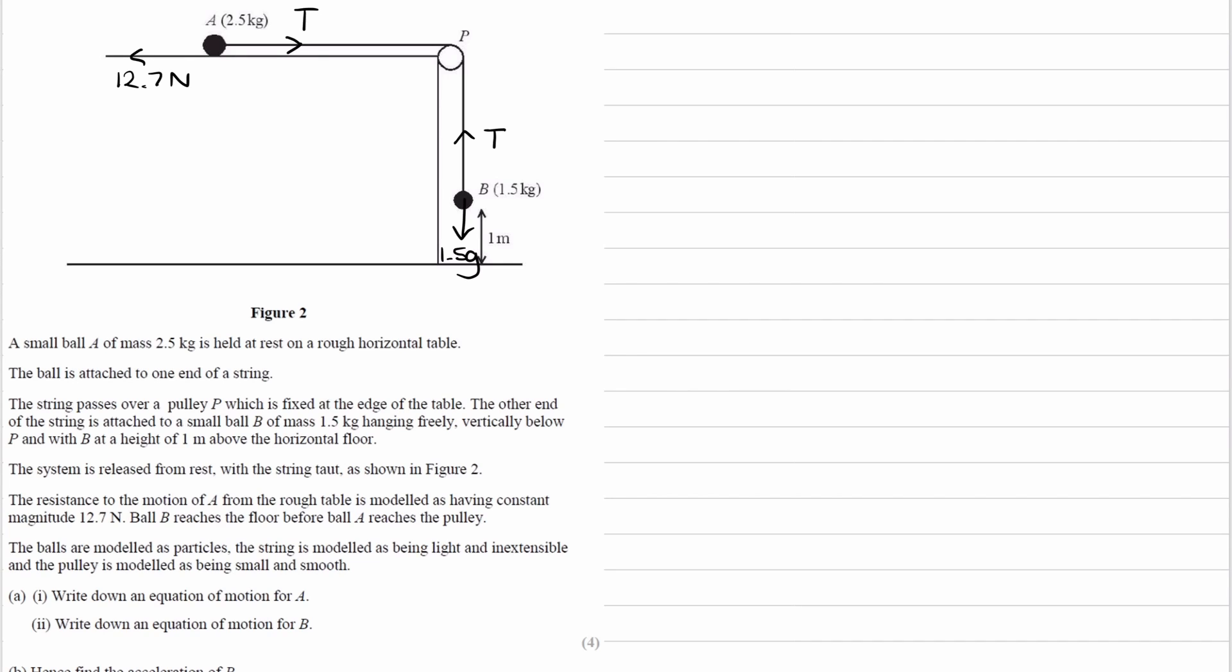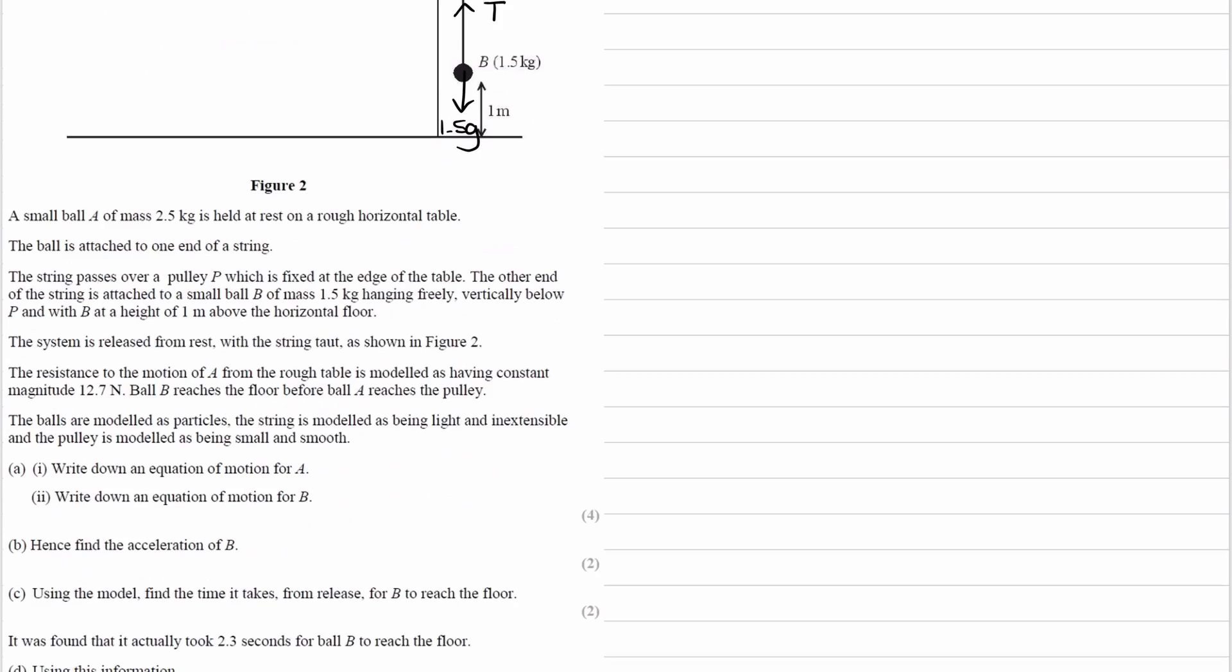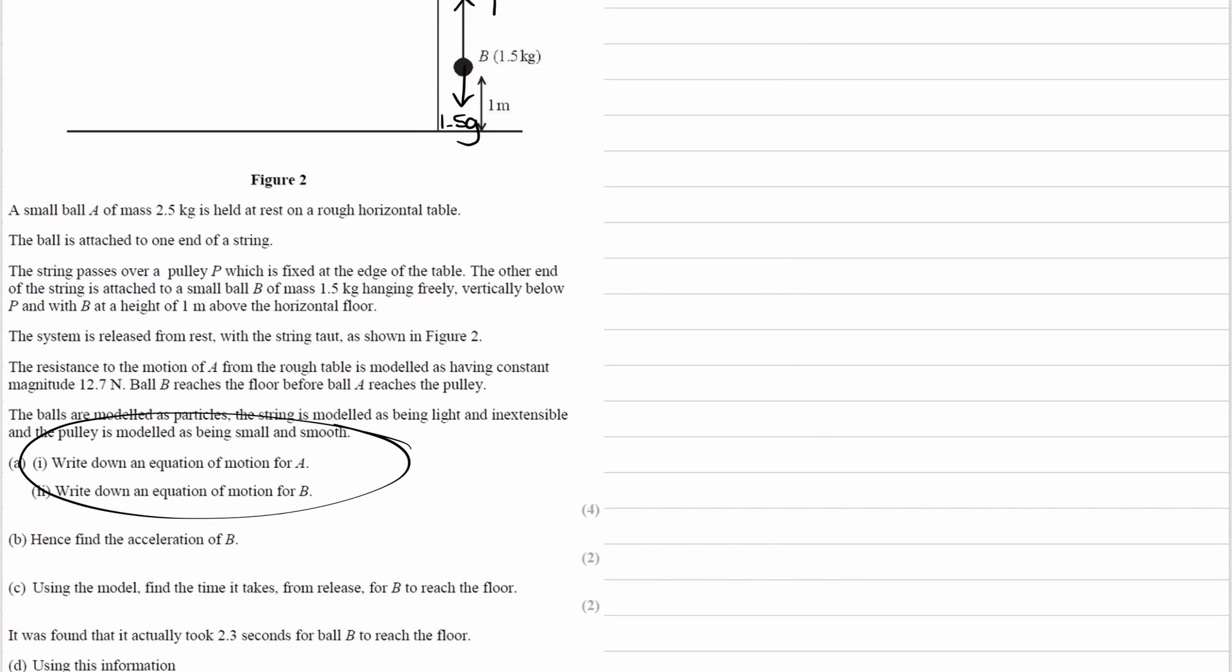It says in the question ball B reaches the floor before ball A reaches the pulley. That would mean that the distance that we have here must be more than a metre. And then we have our assumptions. The balls are modelled as particles, the string is light and inextensible, and the pulley is small and smooth. For the first part it says write down an equation of motion for A, and then for part two it's for B.